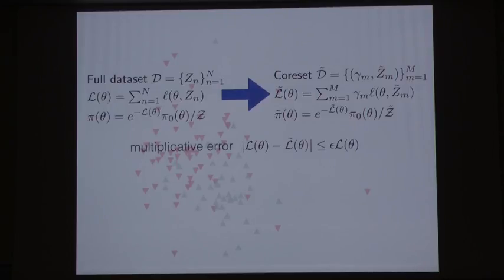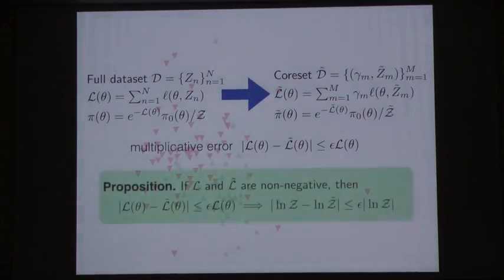So where these weights show up is just in our negative log-likelihood calculation. So now we weight each of those negative log-likelihood terms by this gamma. And the approximate posterior looks exactly like what you would expect. So the guarantee we're going to aim for on our approximate negative log-likelihood is this multiplicative error guarantee.